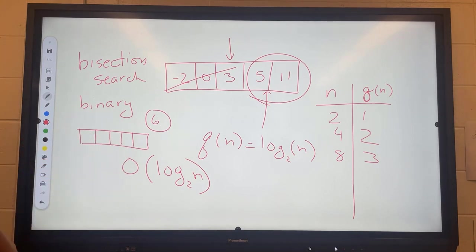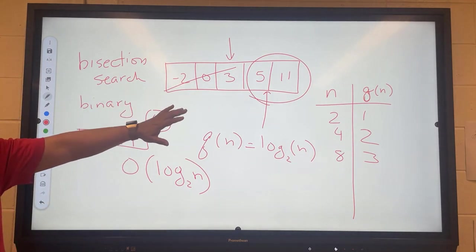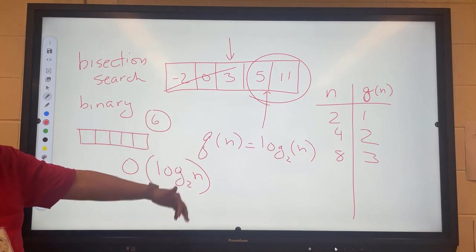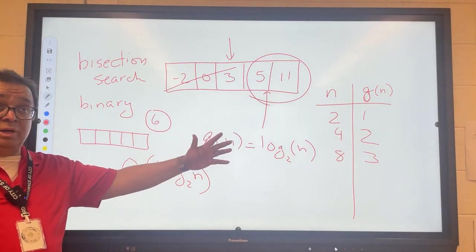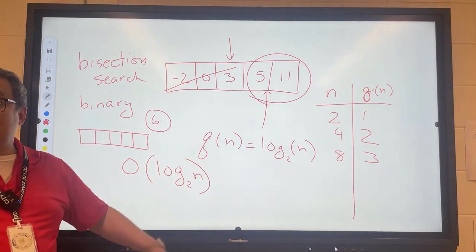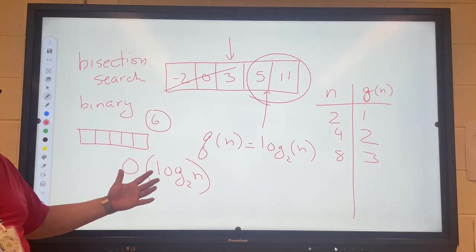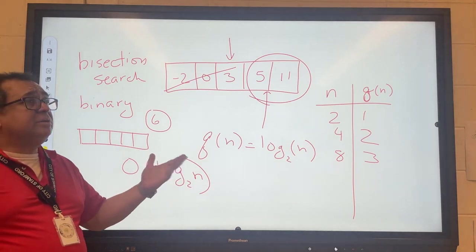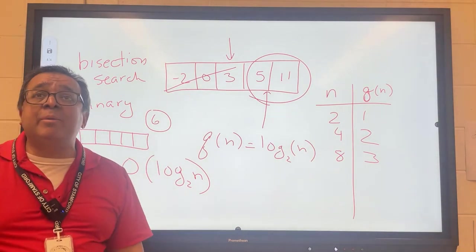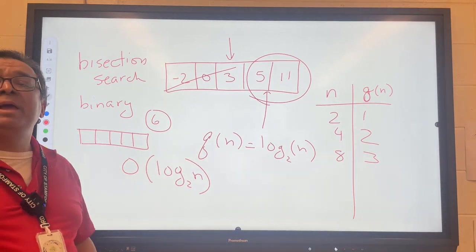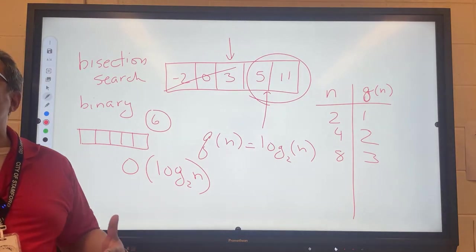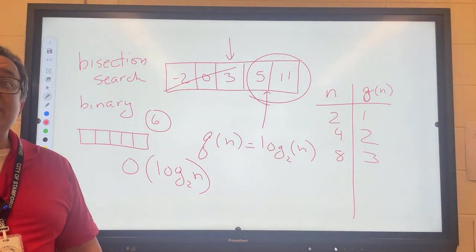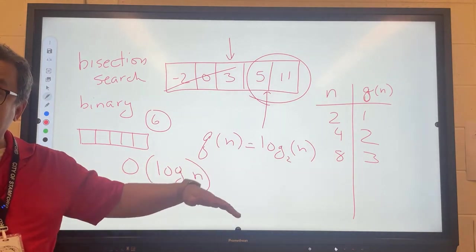We're trying to compare two scenarios. One scenario is we leave the array unsorted and just go through the pain of a linear search. Alternatively, we can sort the array and then do a bisection search. I think we agree if the array is already sorted, then choice B is the clear winner. But now the question is, do we want to pay the price of sorting the array? It turns out it's a trick question because it depends how many times you're going to look in the array.